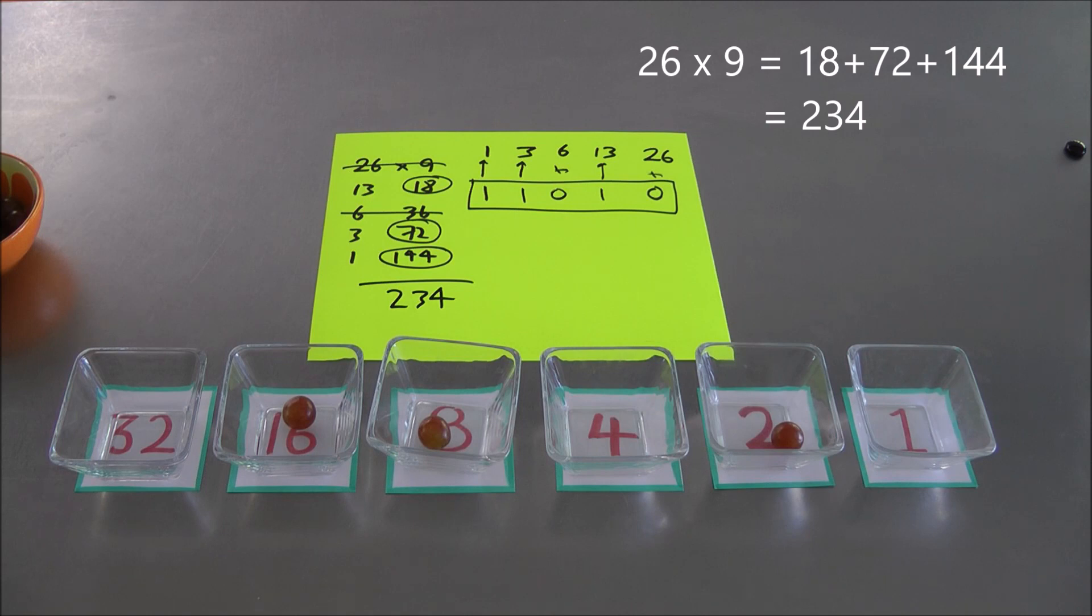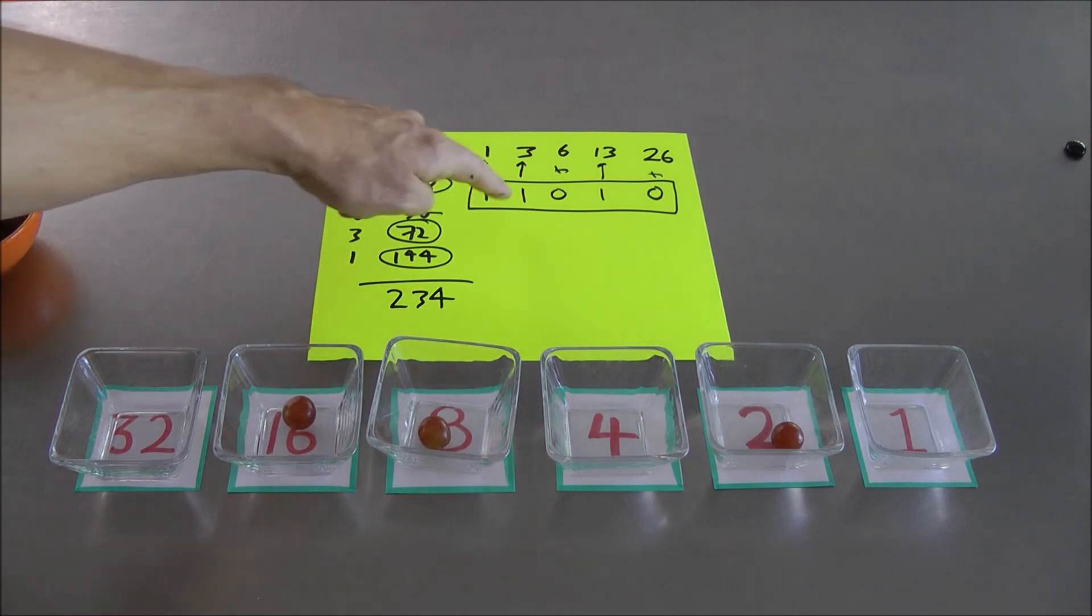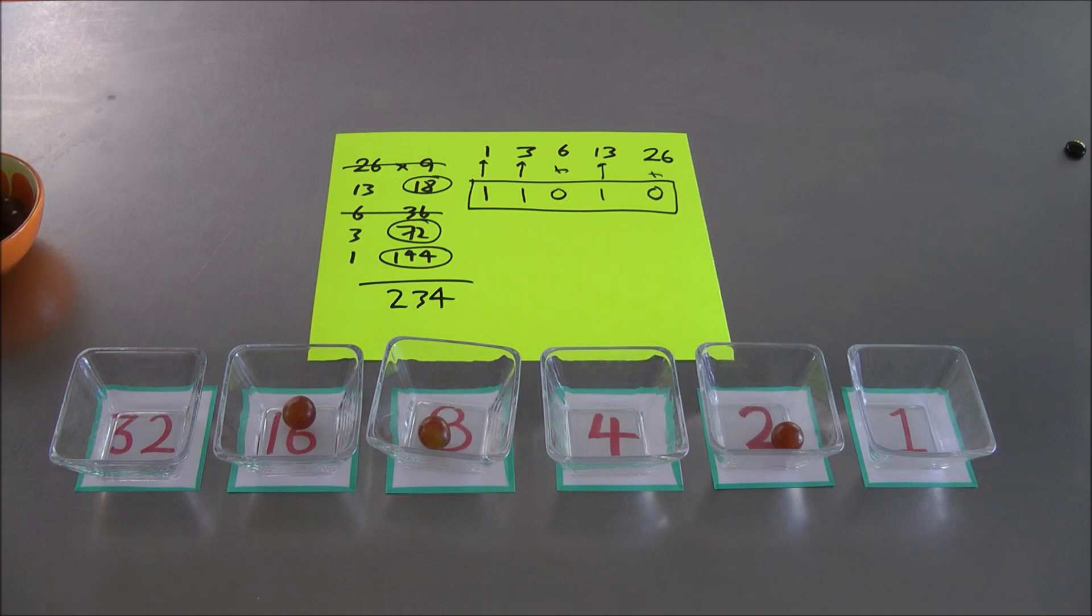So my question to you is, why does that crazy doubling method, halving and doubling method of multiplication actually work? And you can see the connection here between the binary representations that's going on. So there's a little hint.